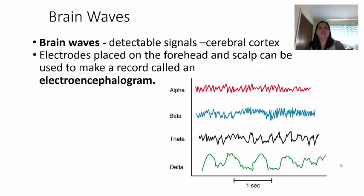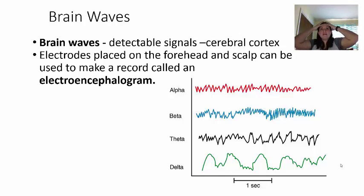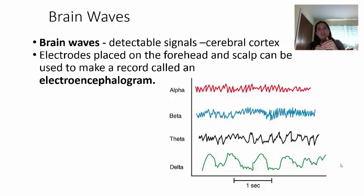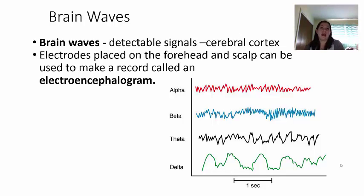The last thing before we get into cranial nerves is brain waves. These are detectable signals of neurons firing, specifically in the cerebral cortex — the topmost part. When we do an electroencephalogram (EEG), we put electrodes on the forehead and scalp, so it won't register deep nerve impulses but will register this top part. This is also how nerves communicate with each other. We're going to look at the four main types of brain waves: alpha, beta, theta, and delta, which are located in your book on page 504.